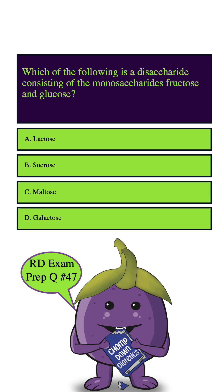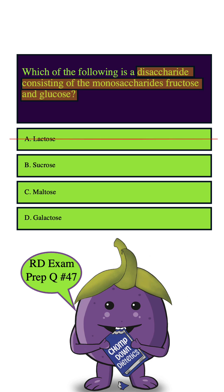So let's highlight our key words: disaccharide consisting of the monosaccharides fructose and glucose. Starting with A — lactose is a disaccharide, but it's composed of the monosaccharides glucose and galactose, not glucose and fructose. So we can safely eliminate this answer choice.